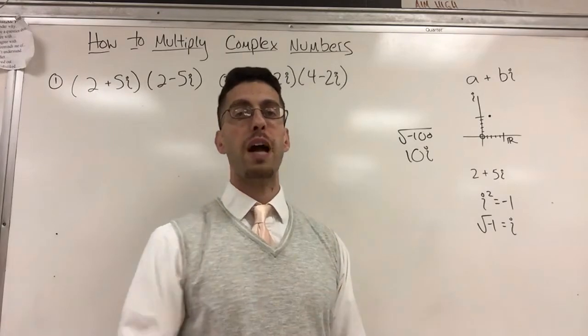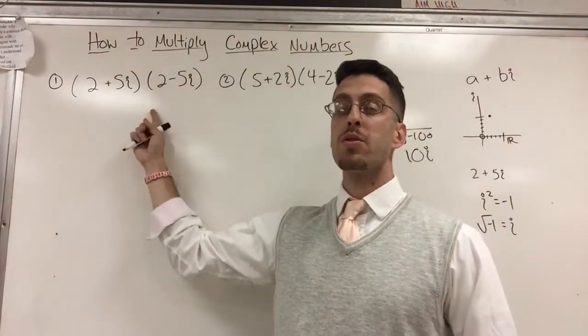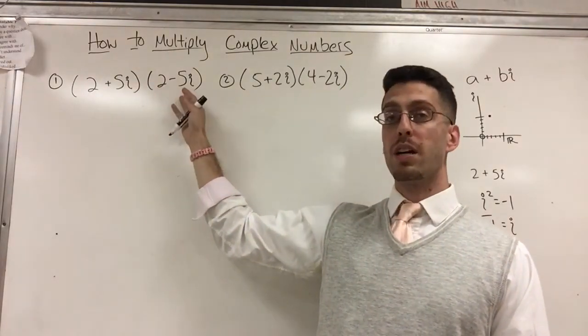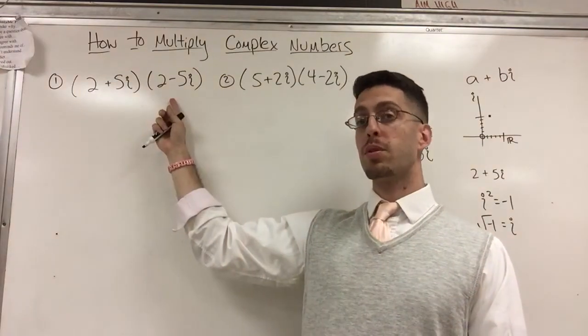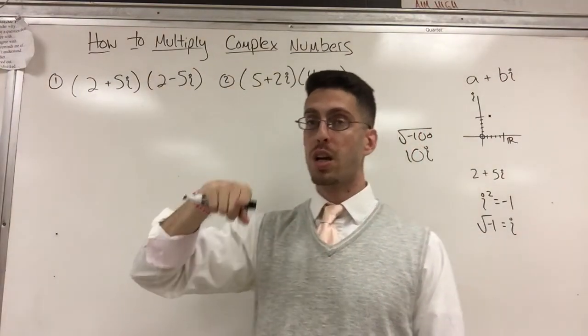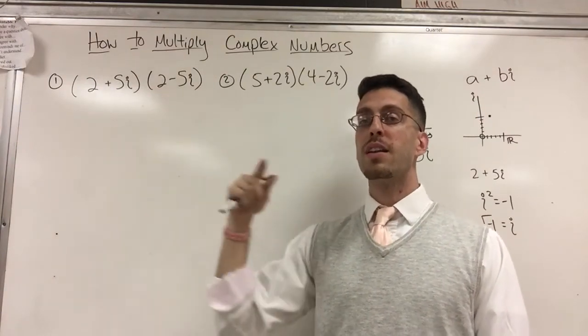If I want to multiply complex numbers, a plus bi times a plus bi, two different complex numbers, I made this special. I put them as conjugates. Remember that word: conjugates. The terms are the same but one is a plus and one is a minus.